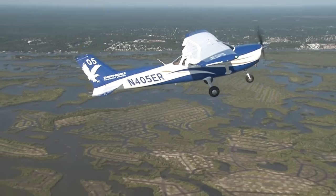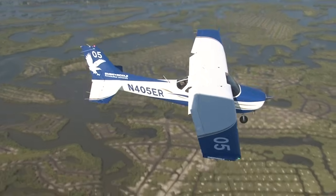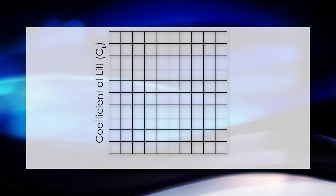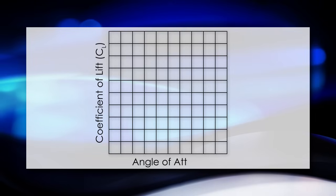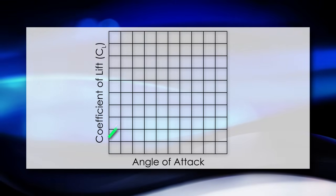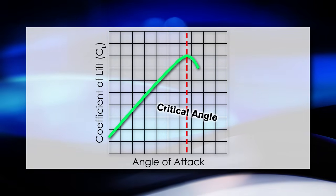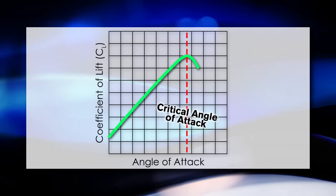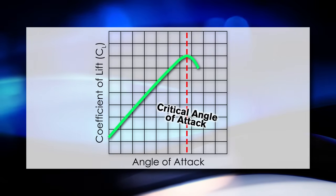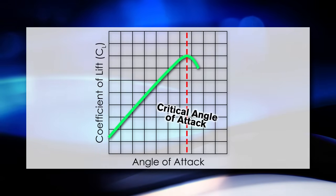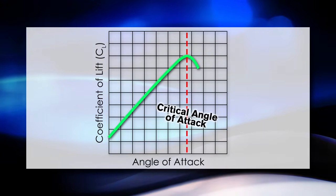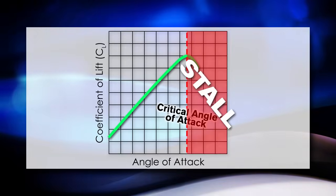However, there's a limit to this angle. Looking at a chart plotting the coefficient of lift of a particular wing as its angle of attack increases: lift will continue to increase until a certain angle of attack called the critical angle of attack. After this point, the wings will still create lift, but the amount of lift created is decreased. This is called a stall.